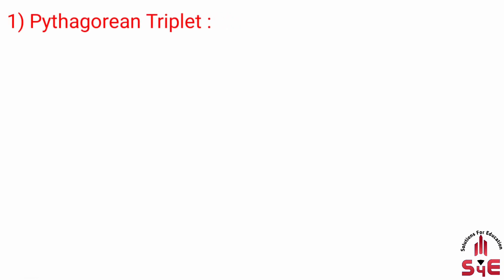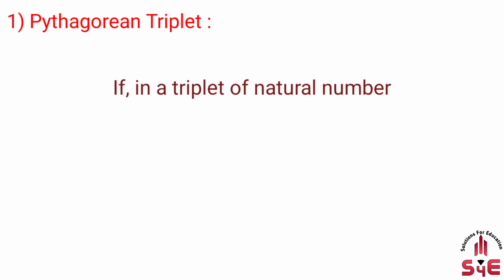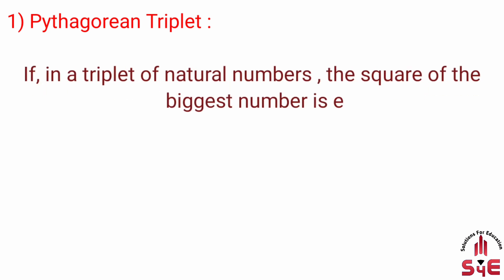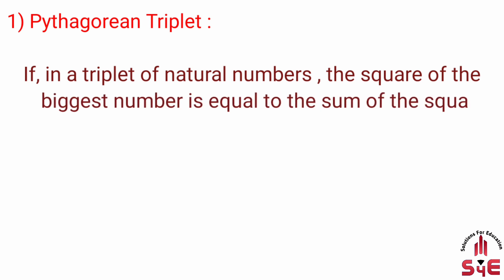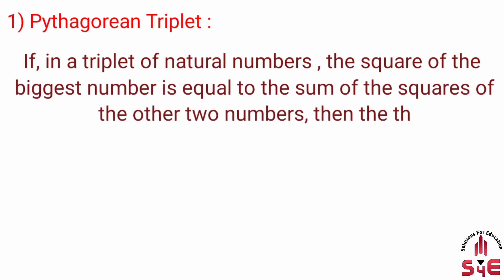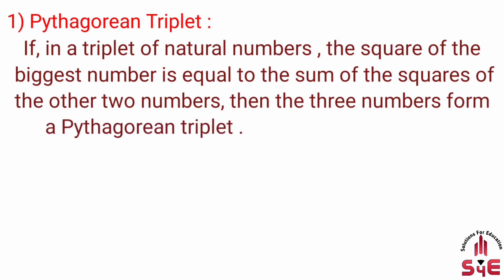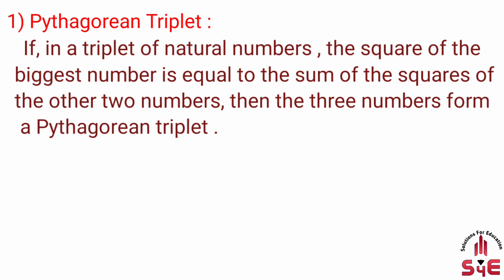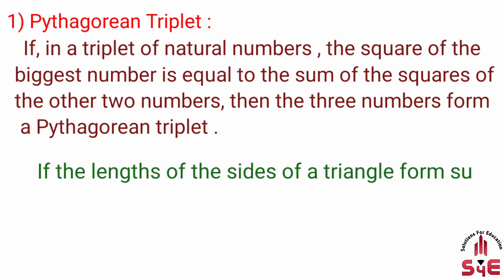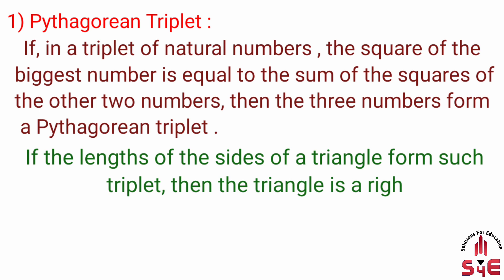Pythagorean Triplet: If in a triplet of natural numbers, the square of the biggest number is equal to the sum of the squares of the other two numbers, then the three numbers form a Pythagorean Triplet. If the length of the sides of a triangle form such a triplet, then the triangle is a right angled triangle.